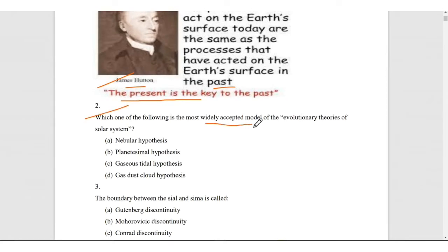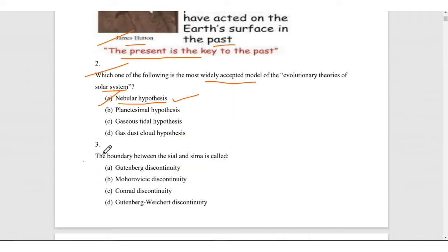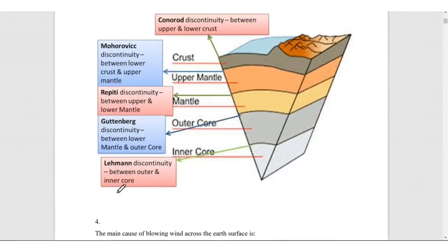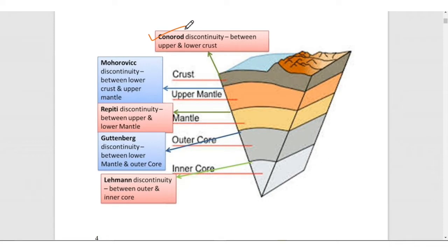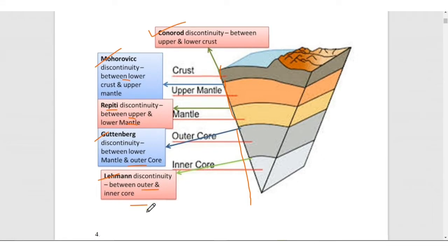Which of the following is most widely accepted model of the evolutionary theories of solar system? The answer is nebular hypothesis, which is most widely accepted everywhere. Next, the boundary between the sial and sima is called Conrad discontinuity. Conrad is between the upper and lower crust, Mohorovičić lies between lower crust and upper mantle, Repetti is between upper and lower mantle, Gutenberg between lower mantle and upper core, and Lehmann discontinuity between outer and inner core.